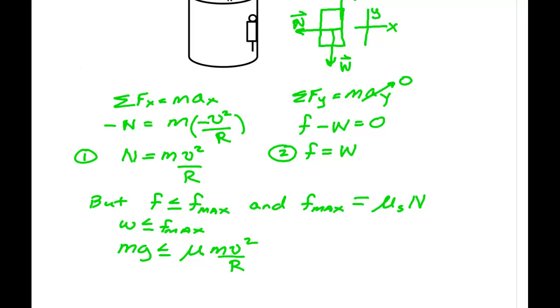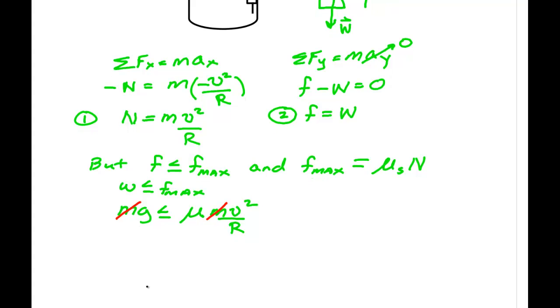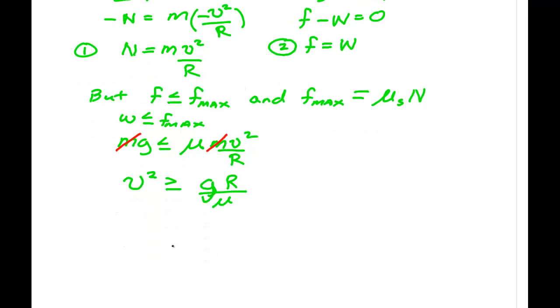Now, one of the things, of course, to note is that the mass cancels. And so, we now have v squared is greater or equal to g times r over mu. Let me make that g a little better. And so, the tangential speed for this thing to work has to be greater or equal to the square root of g r over mu.